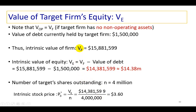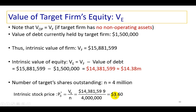Adding the two present values together, we find the intrinsic value of the firm's operations to be approximately $15.88 million. If the firm has any non-operating assets, those would need to be added to find the total value of the firm. Otherwise, the value of operations is the intrinsic value of the firm. To find the intrinsic value of equity, subtract the firm's debt — giving us $14.38 million. Dividing by 4 million shares outstanding, the intrinsic stock price is $3.60 per share.